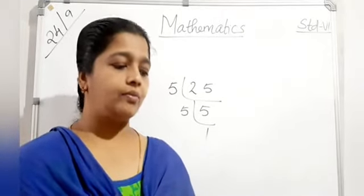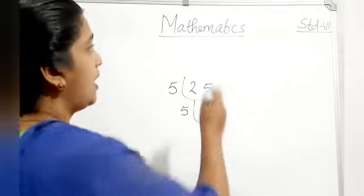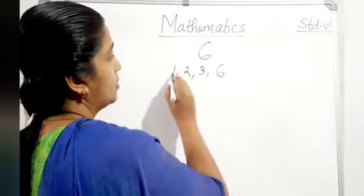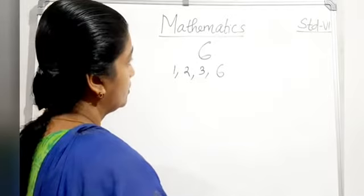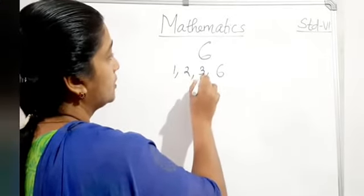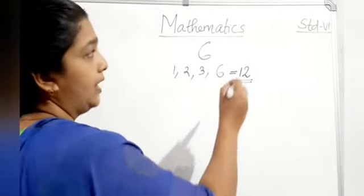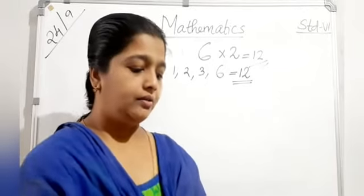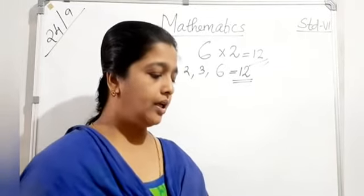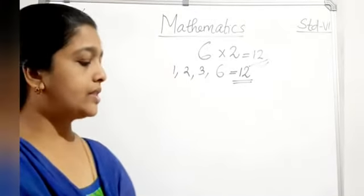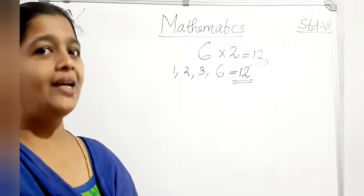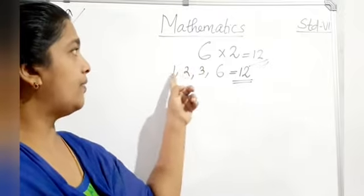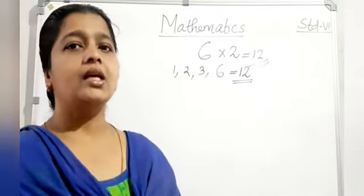Example of a perfect number: 6. Factors of 6 are 1, 2, 3, and 6. Sum: 1 + 2 + 3 + 6 = 12, and 6 × 2 = 12. A perfect number is one where the sum of all its factors equals the given number — actually, the sum of factors excluding the number itself equals the number. Both values are the same, so 6 is a perfect number.